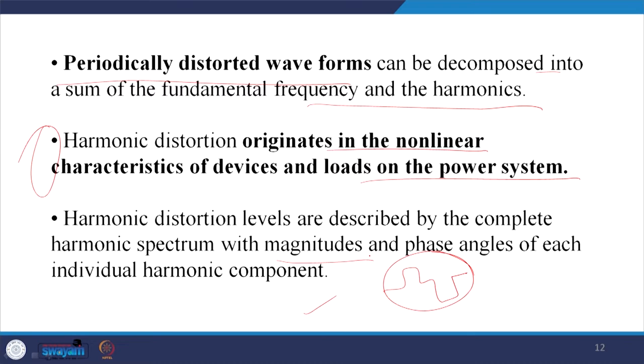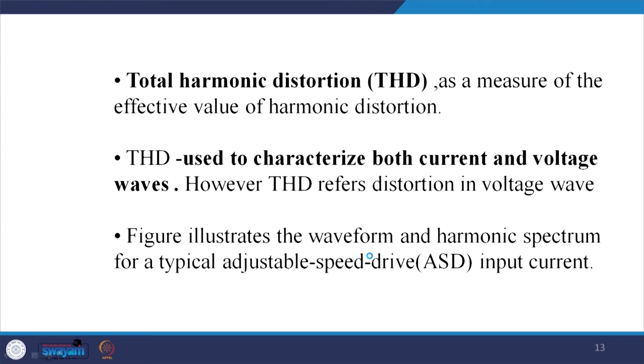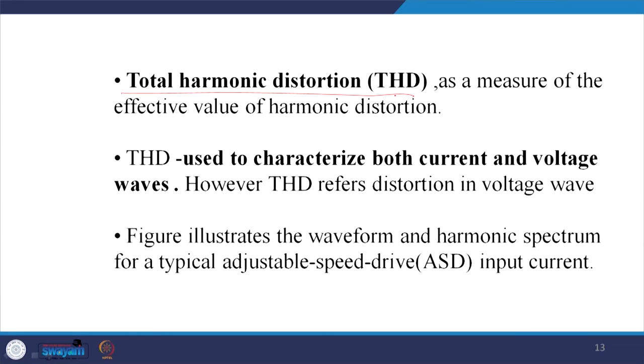Harmonic distortion levels are described by the complete harmonic spectrum, with the magnitude and phase angle of each individual harmonic component. Total harmonic distortion — THD — is a measure of the effective value of the harmonic distortion and is one of the prime criteria in power quality. It is used to characterize both current and voltage waves; however, THD sometimes specifically refers to distortion of the voltage wave.